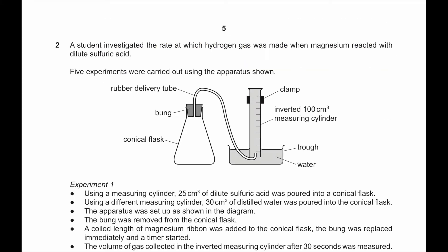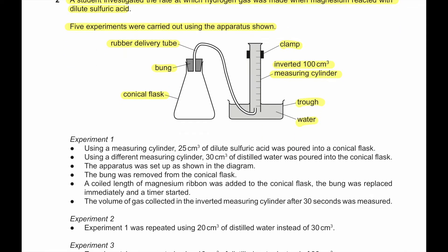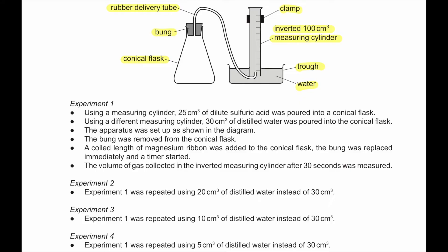Question number 2. A student investigated the rate at which hydrogen gas was made when magnesium reacted with dilute sulfuric acid. Five experiments were carried out using the apparatus shown, which includes a rubber delivery tube, rubber bung, conical flask, clamp, inverted 100 cm³ measuring cylinder, trough, and water. A gas displacement method is used — gas rises in the measuring cylinder to give the volume.